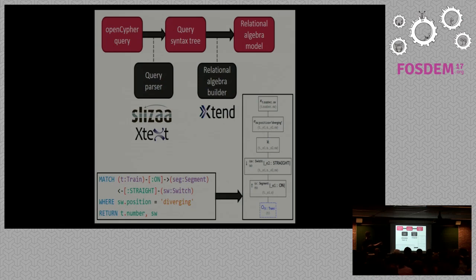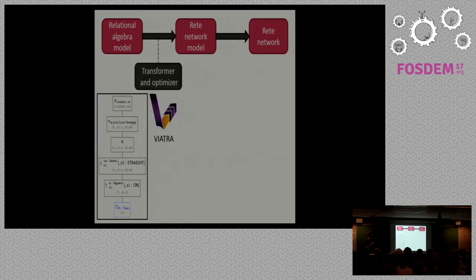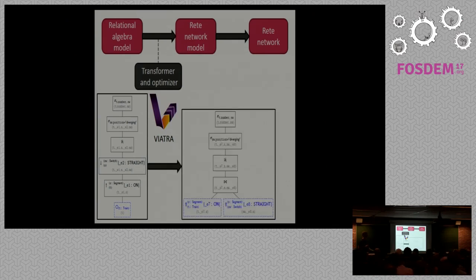So we use Slizaa's Xtext language, and then we build the relational algebra model through code implemented in Xtend, which is, as you have probably guessed, a technology that's built on top of Xtext. So this is a technology that allows us to very efficiently implement the algebra builder. And we build this on top of Eclipse models. So the parser takes this input and then it builds a simple search plan, which is basically a relational algebraic expression. So now what we have to do is somehow transform this to a RETE network which allows incremental computation and deploy it. So first we transform it and do some optimizations.